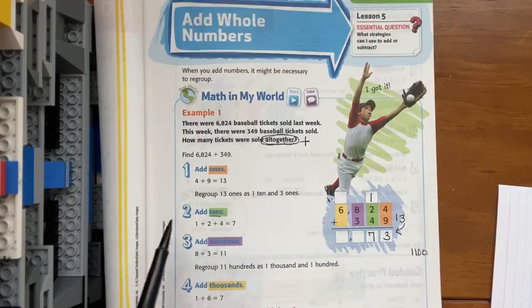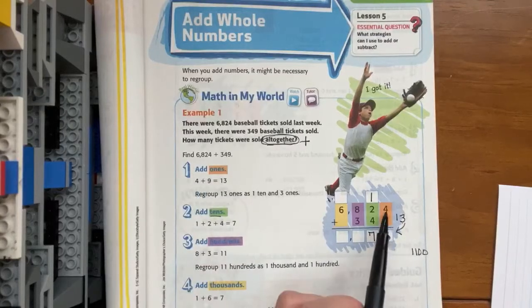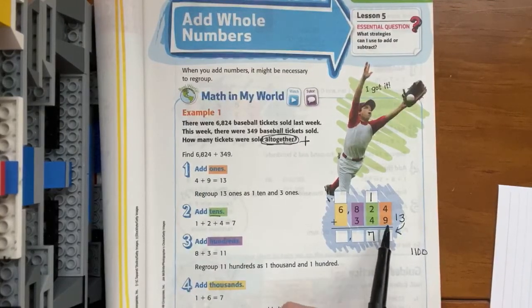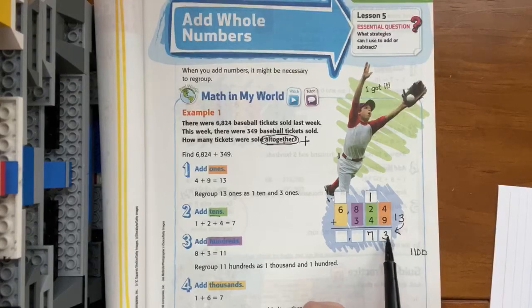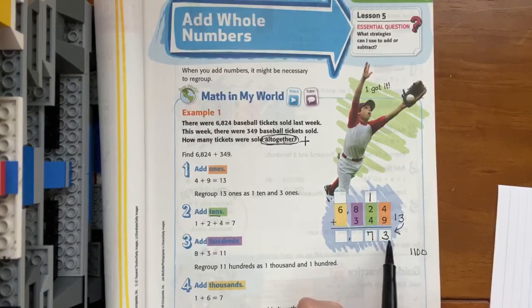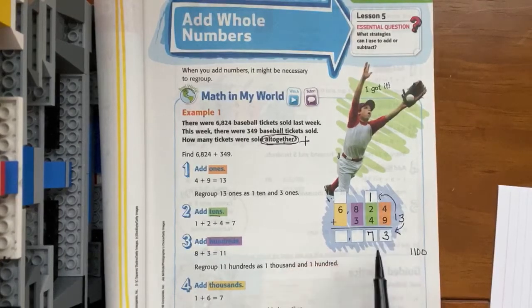So let's look at our steps to add our story problem. Step one says to add the ones. So I've added the ones, and I've recorded 13, and I've shown you that I need to make sure that I put my group of ones under the ones, and I put my one group of 10 up here in the tens column.